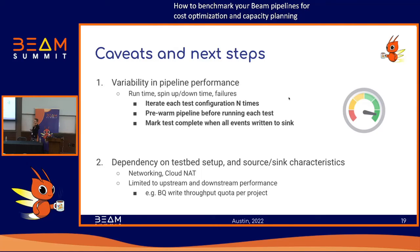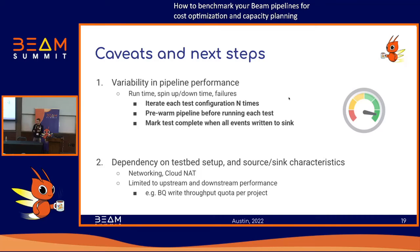Pre-warming the pipeline before running each test is also an optimization — you want to exclude the spin-up time and focus on the streaming job itself. One approach is to pre-warm the pipeline with 10,000 messages and then run your test of one million messages. We are iterating over each test configuration, and having it iterate a hundred times seems reasonable. There's also a dependency on testbed setup and source-sink characteristics — it could be CPU-bound, network-bound, or memory-bound.